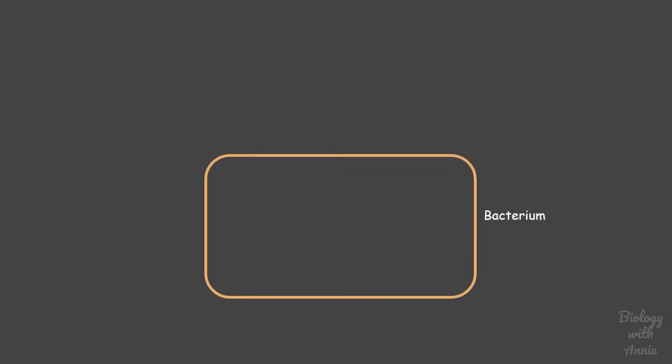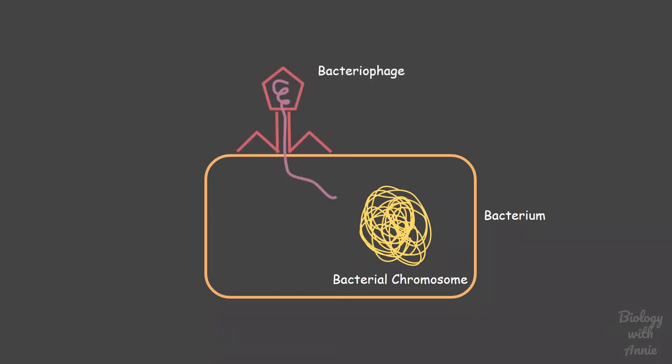Now imagine this is a bacterial cell. Inside it is the bacterial chromosome which has the ability to replicate. Bacteria can be attacked by viruses known as bacteriophage which do not have any machinery to replicate their DNA, so they invade bacterial cells by inserting their DNA with the purpose of hijacking bacterial machinery so that their DNA can now be replicated.